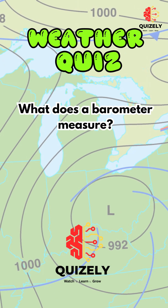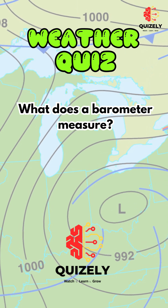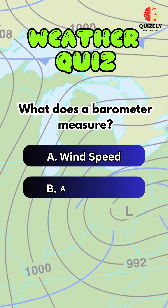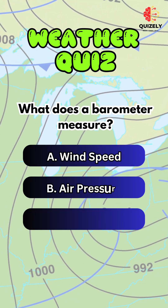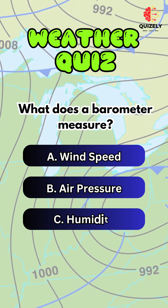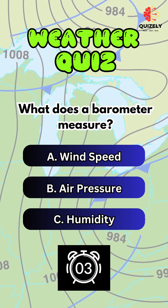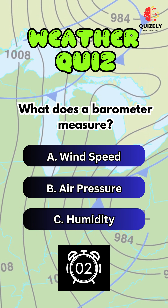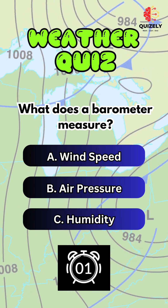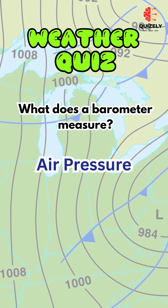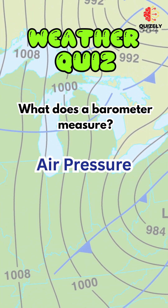What does a barometer measure? A. Wind speed. B. Air pressure. C. Humidity. Correct answer is air pressure.